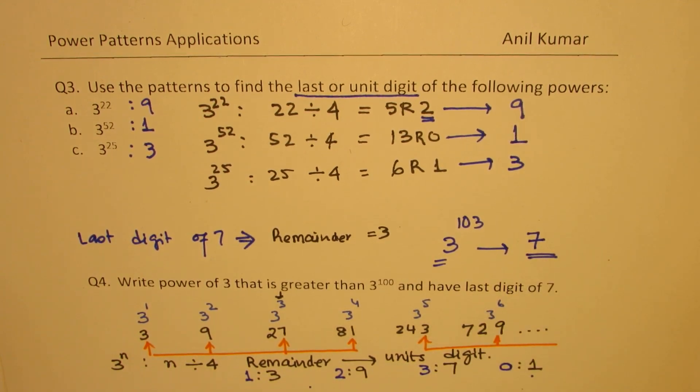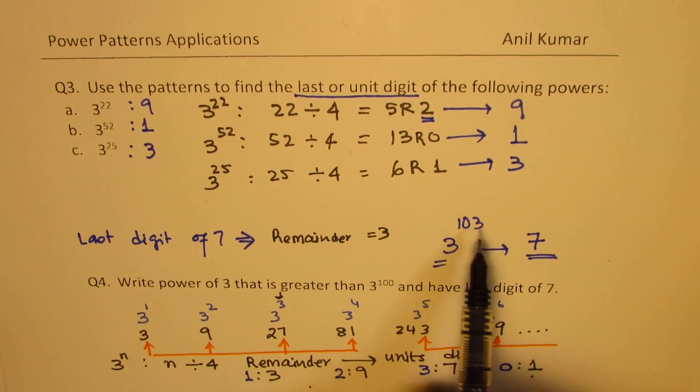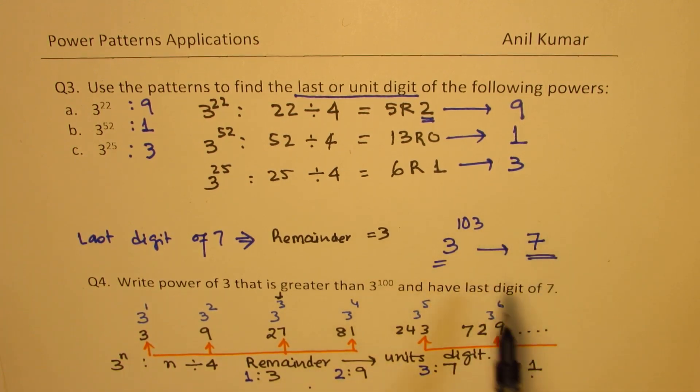So, in our case, the answer has to be 3 to the power of 103. The answers can vary, of course. You could add 4 to this. 107, 111 like that. You can have many. Keep on adding 4, right? So, that is how we get. So, any multiple of 4 plus 3 is your exponent for this particular case. I hope that makes sense.